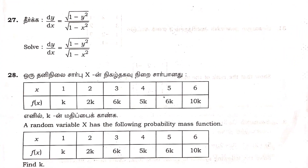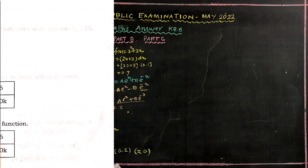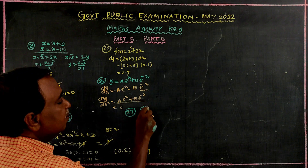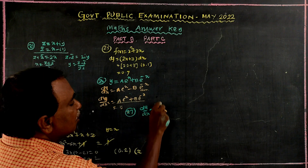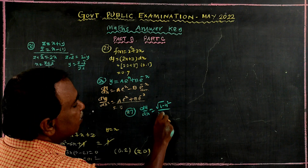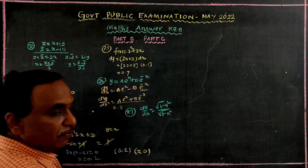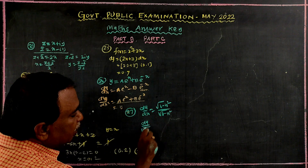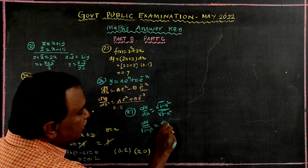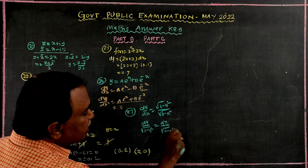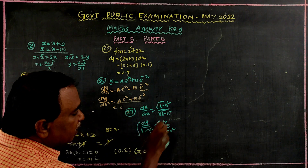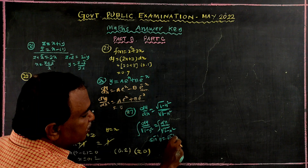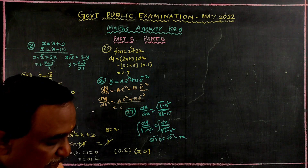Problem number 27: dy/dx is equal to root of 1 minus y squared divided by root of 1 minus x squared. Separating variables: dy divided by root of 1 minus y squared equals dx divided by root of 1 minus x squared. Integrating both sides, sin inverse of y is equal to sin inverse of x plus c. That is your answer.